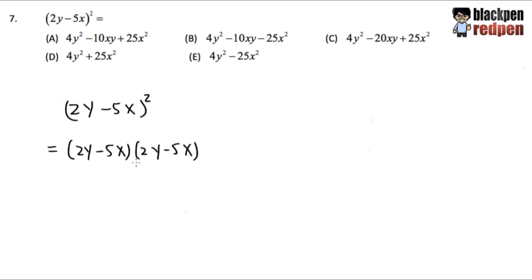This is also called the FOIL method. What we do is make sure we pair up each and every term and multiply out everything correctly. I like to show you guys, using arrows to keep track of that.